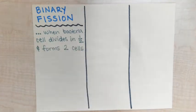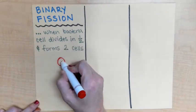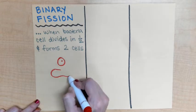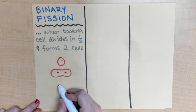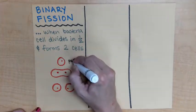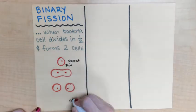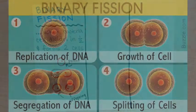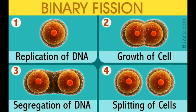Binary fission is, for example, when a bacteria cell divides in half. It takes itself, divides itself in half, and then you get two new cells. So it starts with one parent and then creates two offspring.